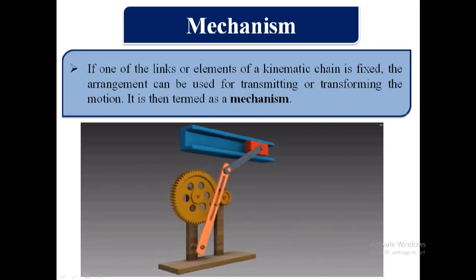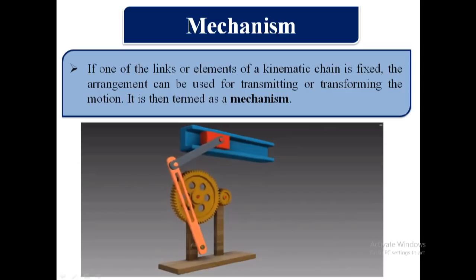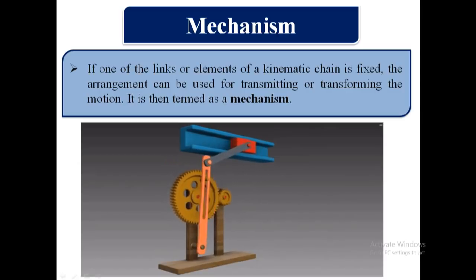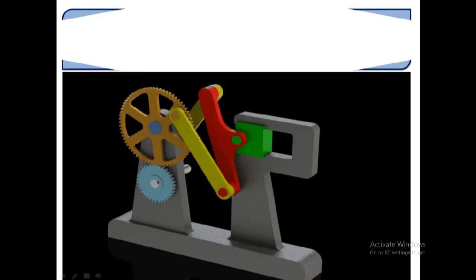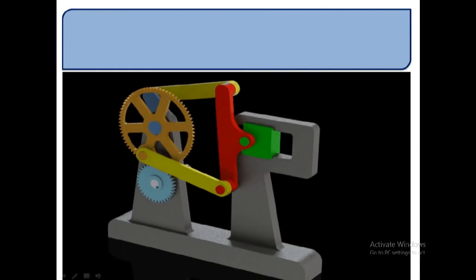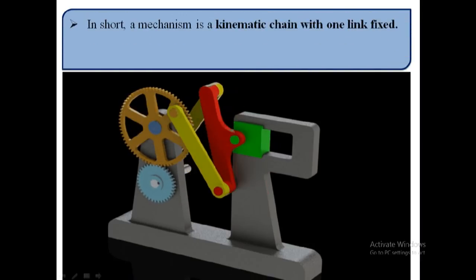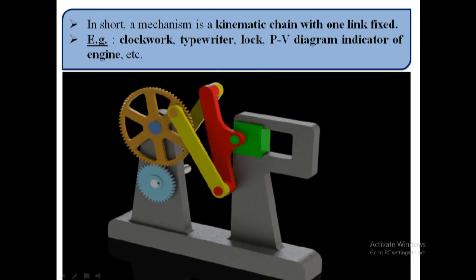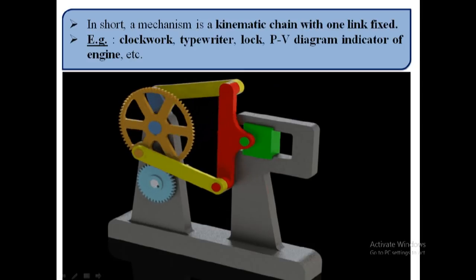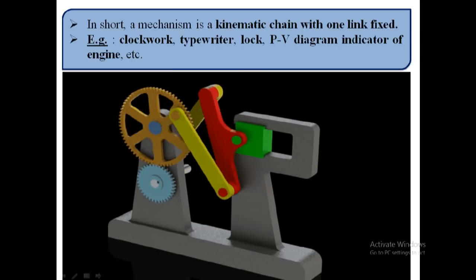If one of the links or elements of a kinematic chain is fixed, the arrangement can be used for transmitting or transforming the motion. It is then termed as a mechanism. In short, a mechanism is a kinematic chain with one link fixed. Examples of mechanisms are clockwork, typewriter, lock, PV diagram indicator of engine, etc.